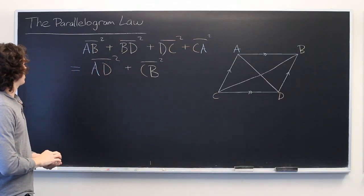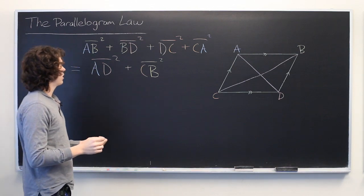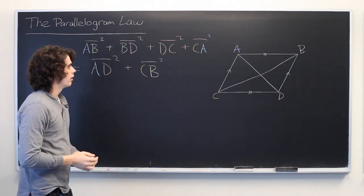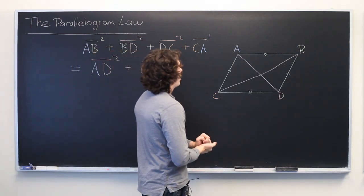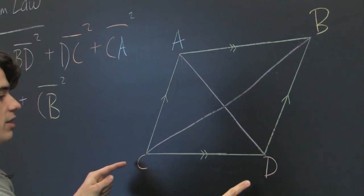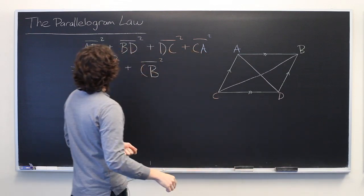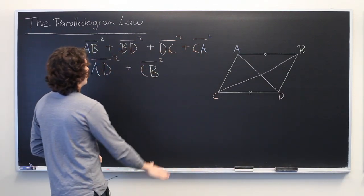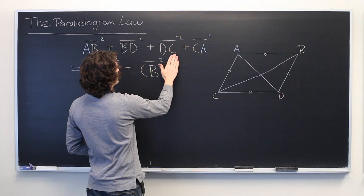All right, so we've got a lot of stuff here, but thankfully it can simplify quite nicely. We know that since this is a parallelogram, the length of AB must be the same as the length from C to D. So, we can take out this DC term and replace it with AB.